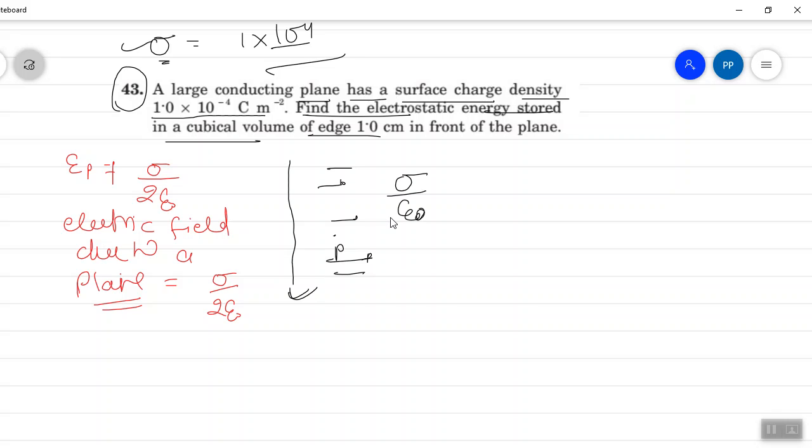This conducting field has electric field sigma by epsilon and you know the value of sigma.